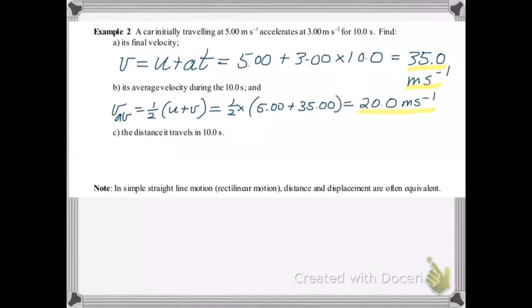And then finally, the distance. Now keep in mind, if an object is moving in a straight line, there's no difference between distance and displacement, unless it changes direction and moves back and forth along that line. So distance and displacement are one and the same in this question. So S equals Vav times T is the simplest way to calculate the displacement or distance.